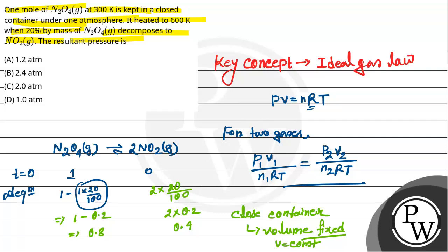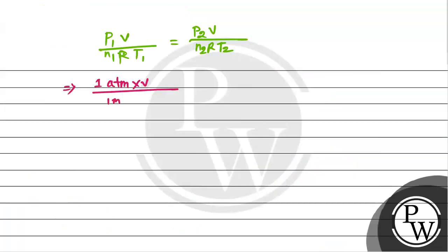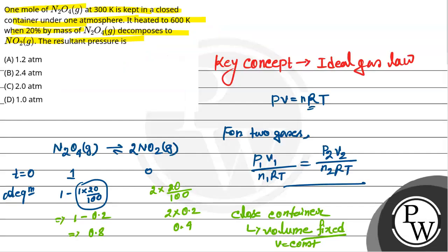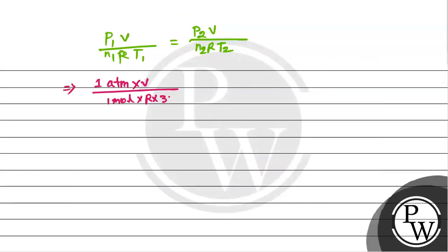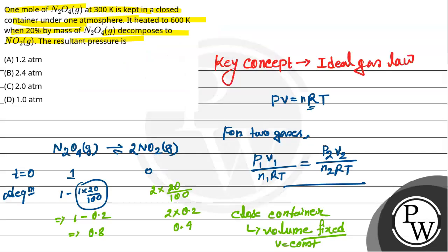So P1 is 1 atmosphere, n1 is 1 mole, and the temperature is 300 Kelvin, and that equals P2. Now the total mole is how much? It was 1 mole, now it is dissociated by 0.8 mole and 0.4, that is 1.2 mole.